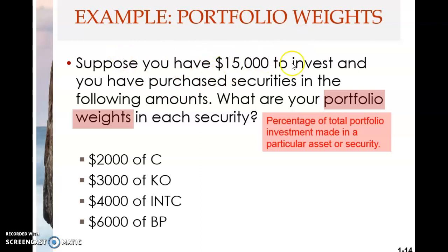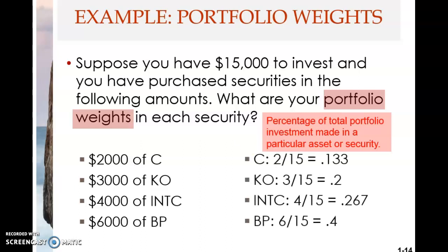Suppose you have $15,000 in total — that's your total investment. You have purchased securities in the following amounts: $2,000 to purchase stock C, $3,000 to purchase stock KO, $4,000 to purchase stock INTC, and $6,000 to purchase stock BP. In total that sums to $15,000. The portfolio weight for stock C is $2,000 over $15,000, which is approximately 0.133 or exactly 2/15.